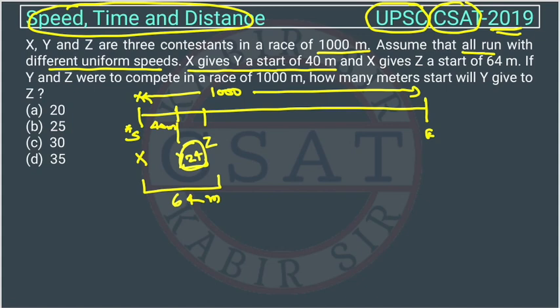If Y and Z were to compete in a race of 1000 meters, how many meters start will Y give to Z? The difference between Y and Z is 24, and Y is standing here. Y is having a start of 40 meters. So how much is Y running? Y is covering a distance of 1000 minus 40.